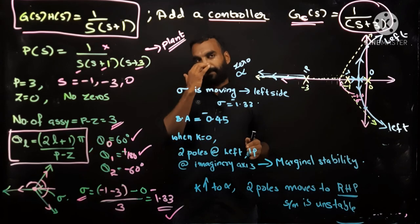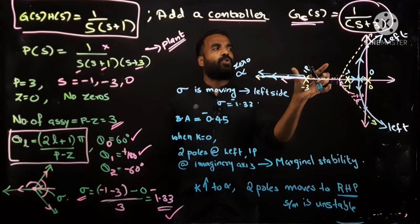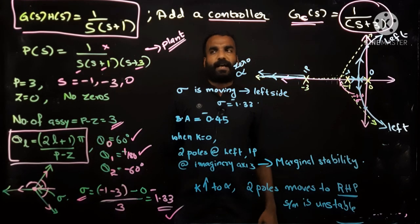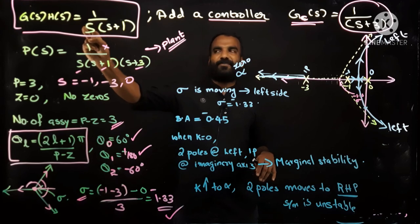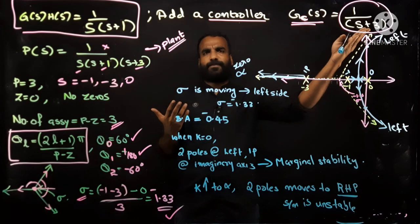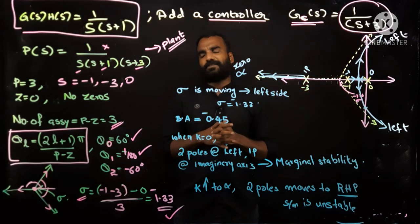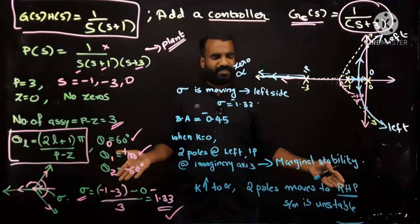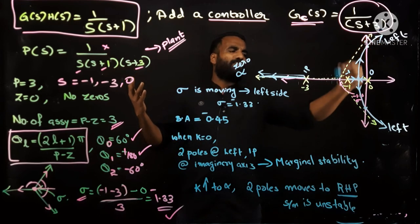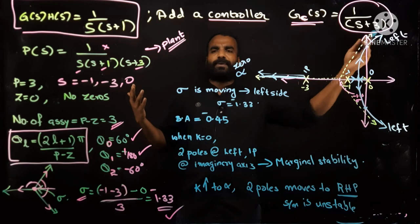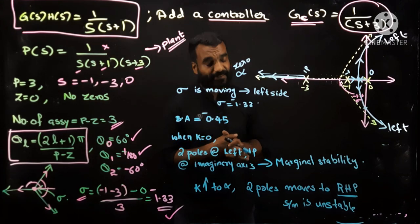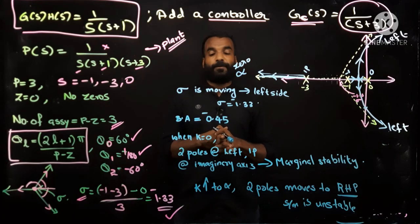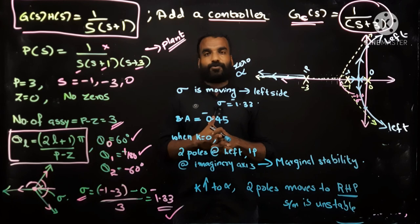Generally speaking, stability reduces — the entire root locus diagram shifts towards the right when we add poles. To answer this in an exam, draw the example of 1/[s(s+1)] and add a pole like s+3, show the shape briefly, and say the locus is crossing towards the right making the system unstable. In the next class we will discuss the effect of adding a zero and by that we will come to the end of this module. Hope you enjoyed this video — you can ask doubts by mail or call. We will see in the next class. Thank you.